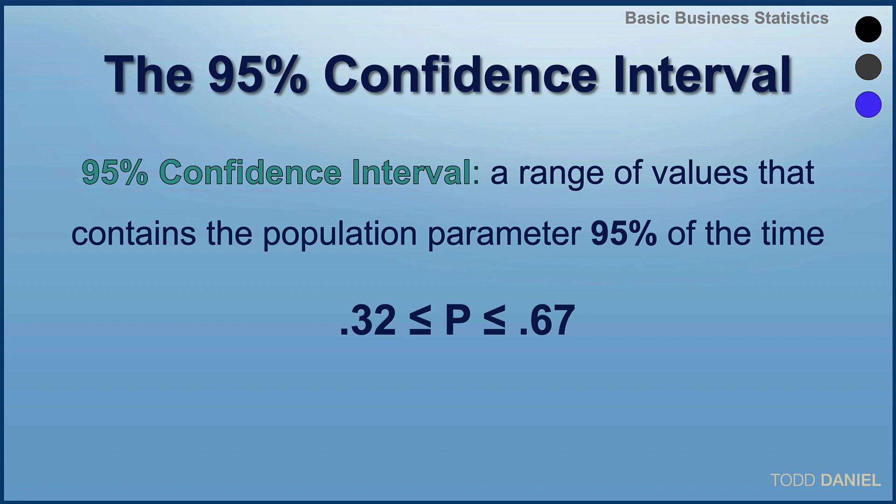As we look at this confidence interval, we see a lower limit of the range, we see an upper limit of the range, and in the middle is the population proportion.